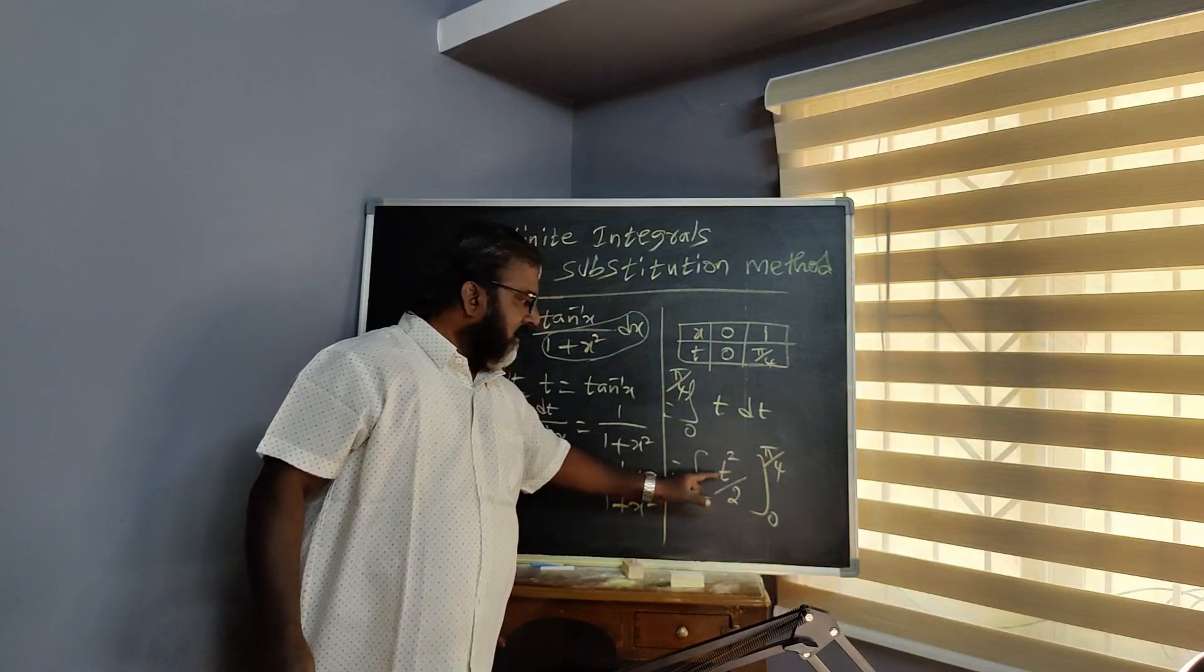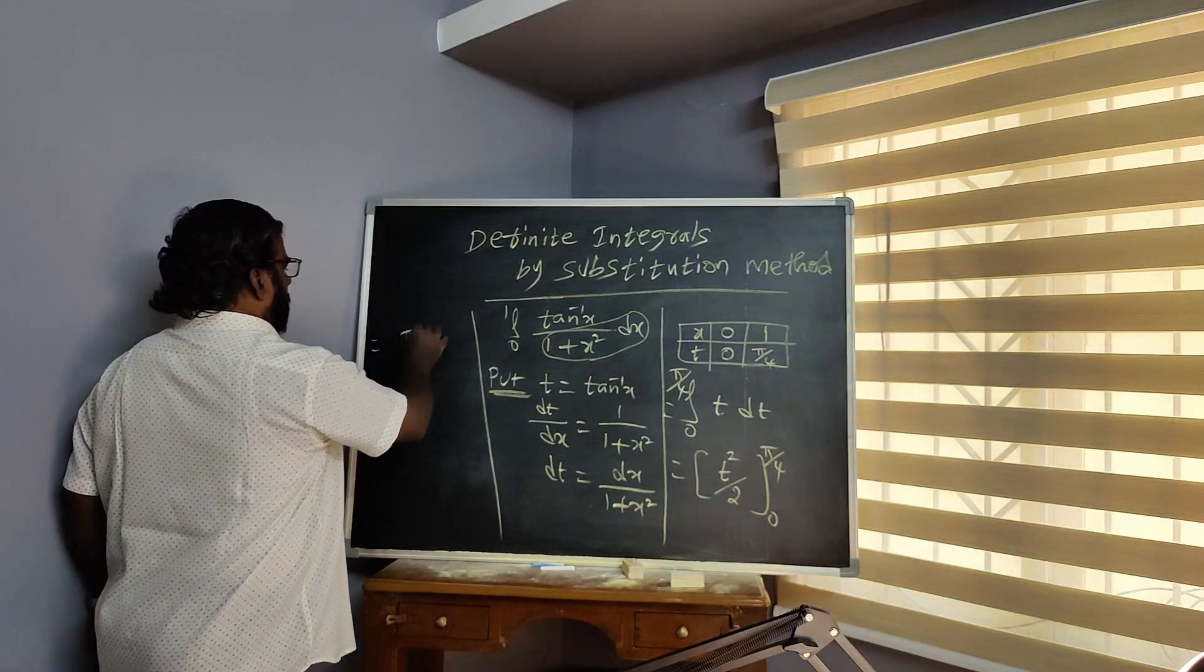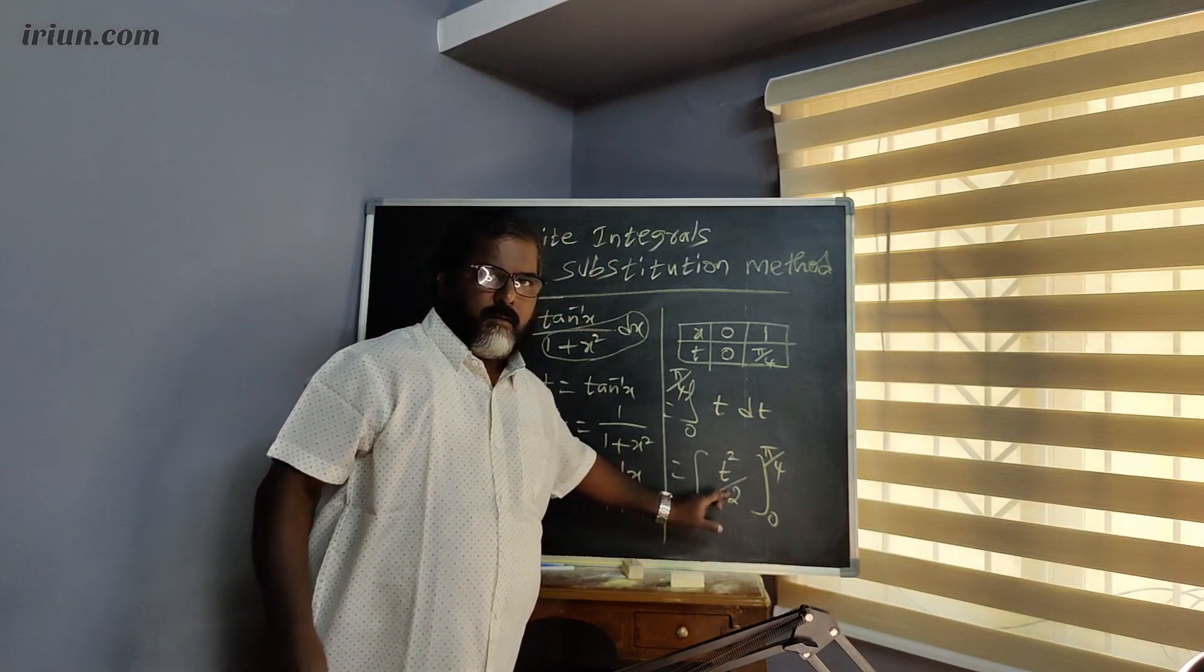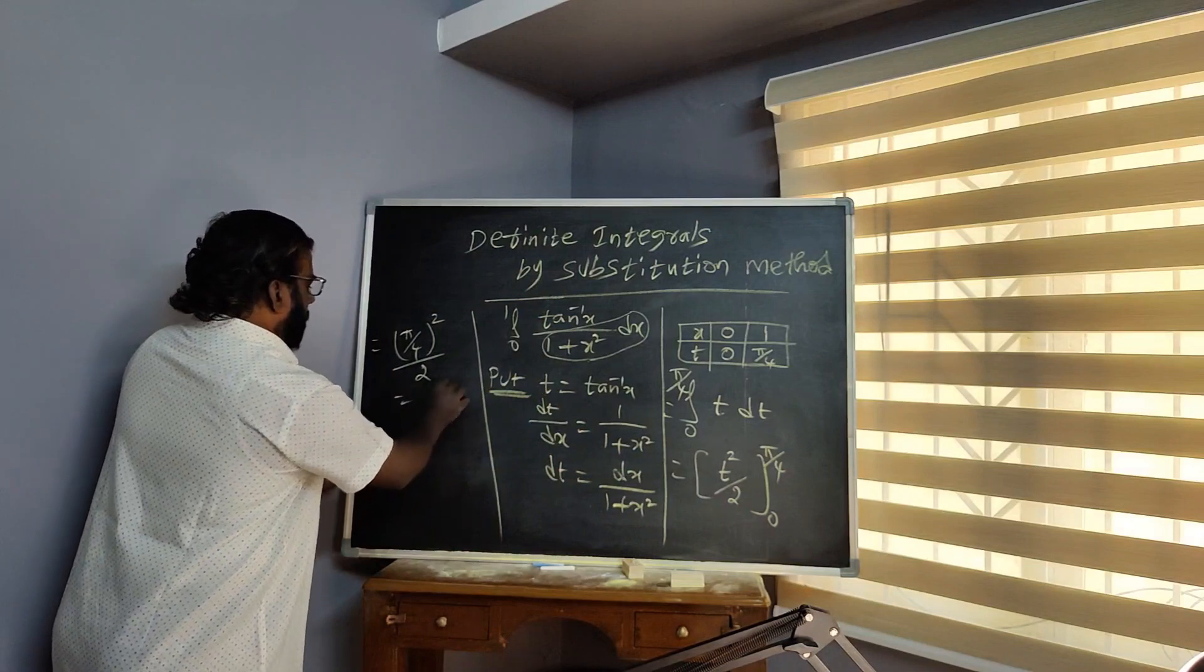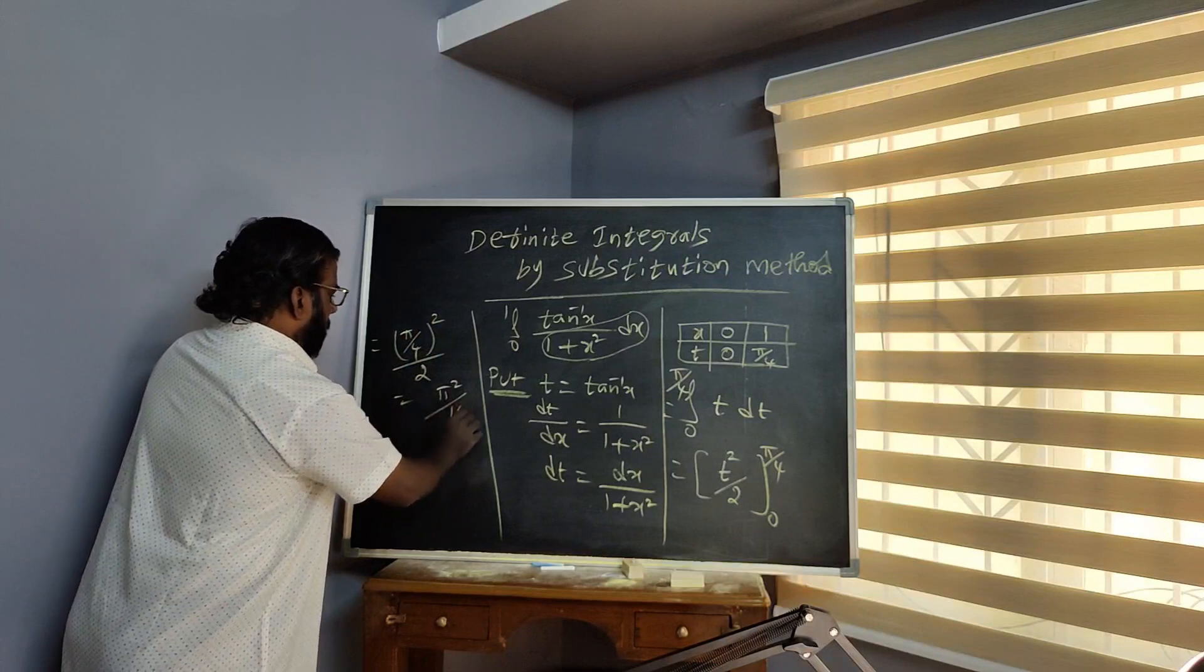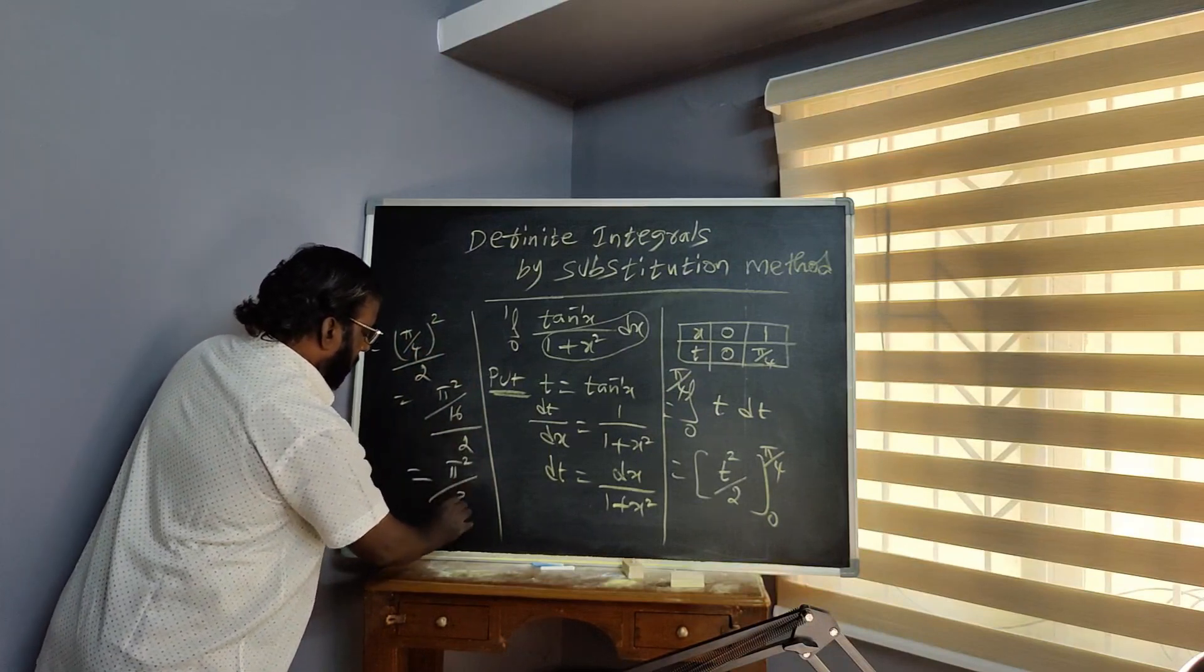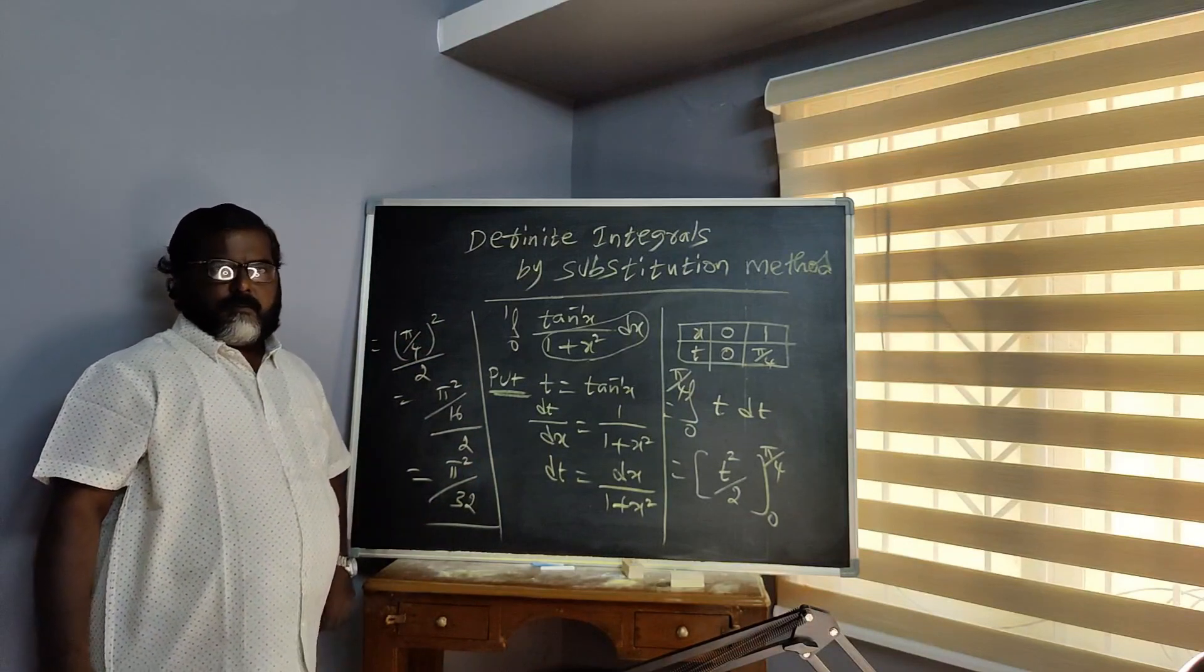Upper limit minus lower limit: pi by 4 whole square by 2. Lower limit is 0, so pi square over 16 divided by 2 equals pi square by 32. This is the answer: pi square by 32.